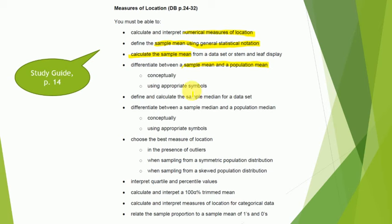We're going to differentiate between a sample mean and the population mean conceptually and using the appropriate symbols. We'll also be looking at the sample median, how to calculate it, how it is defined, and then differentiate between the sample median and the population median conceptually and using appropriate symbols. We're also going to show you how to choose the best measure of location in the presence of outliers, when you have a symmetric or a skewed population distribution. We'll look at quartiles, percentile values, trimmed means, measures for categorical data, and the relation between sample proportion and sample mean of binary data.